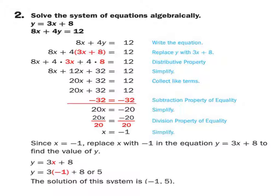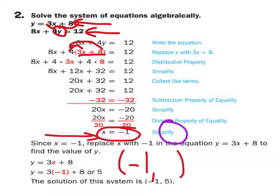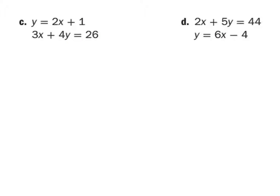When you have one equation in y slope-intercept form, you're going to be replacing the y, because it's y equals some stuff. This one is in standard form, so we're going to replace y with 3x plus 8. Then you've got to distribute the 4 and play the switch and stay game to solve for x. On the test, a lot of people just stop at x — but that's only half the problem. It's a coordinate pair.